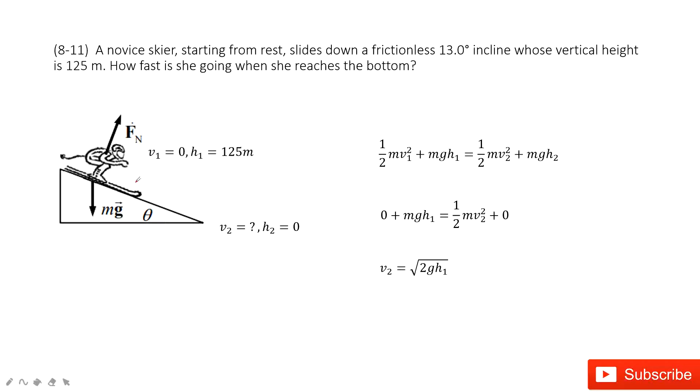As we can see, in this model, the energy is conserved. The initial energy equals the final energy for this person on the slope, right?